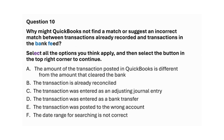What could cause QuickBooks to find an incorrect match or suggest an incorrect match between transactions already recorded and transactions in the bank feed? Select all options that apply. A. The amount of the transaction posted in QuickBooks is different from the amount that cleared the bank. B. The transaction is already reconciled. C. The transaction was entered as an adjusting journal entry. D. The transaction was entered as a bank transfer. E. The transaction was posted to the wrong account. F. The date range for searching is not correct. Answer: Option A, Option B, Option E, and Option F.